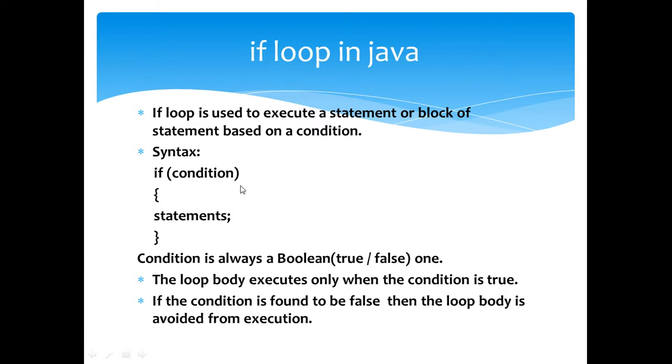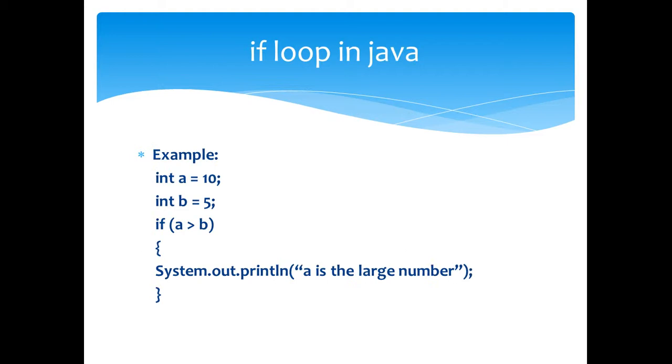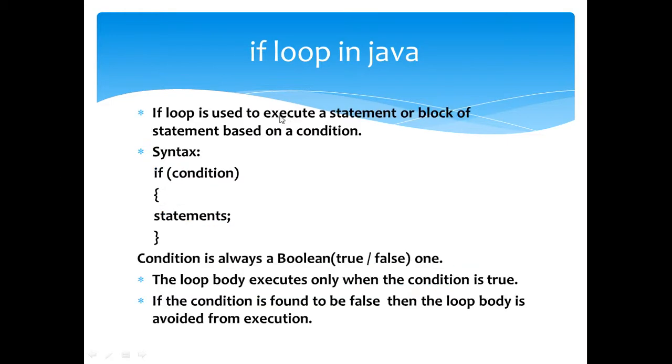The loop body executes only when the condition is found to be a true one. During the execution of the program the condition is checked for true or false. If the condition is found to be true then the loop body executes, otherwise the loop body is avoided from execution.